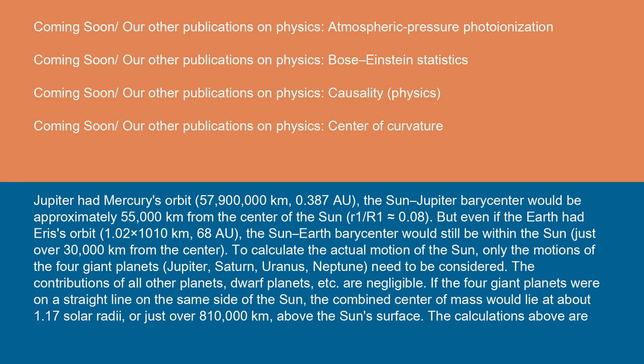If the four giant planets were on a straight line on the same side of the Sun, the combined center of mass would lie at about 1.17 solar radii, or just over 810,000 kilometers above the Sun's surface.